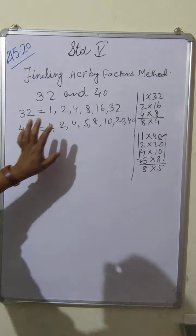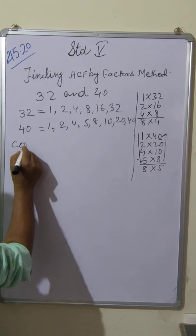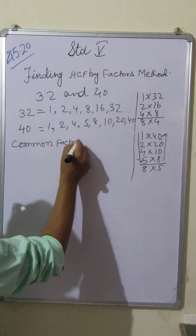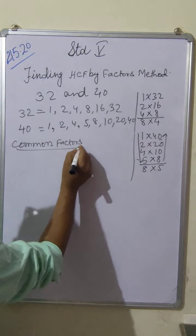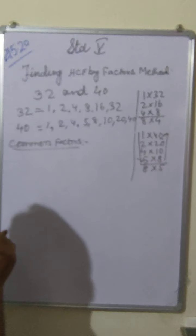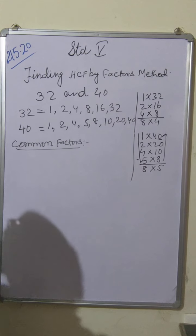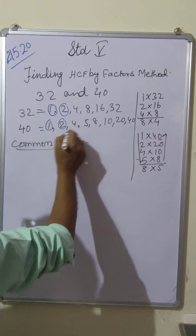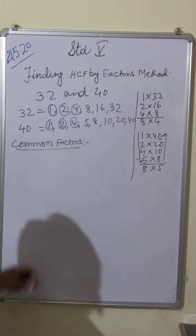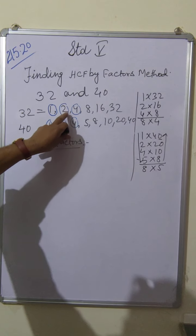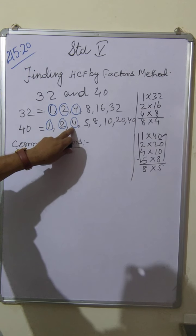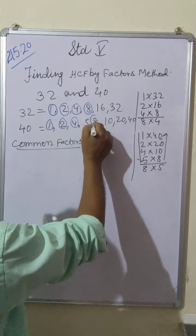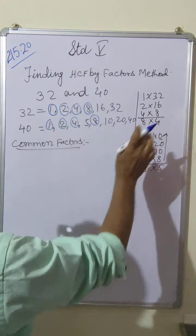You have written all the factors. Then we have to write common factors. Now the common factors. See properly: 1 is common, 2 is common, 4 is common. Common means factors that are present in both, both the numbers. Now which one is common? 8 and 8. Any other number not common.